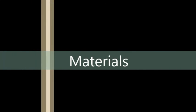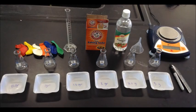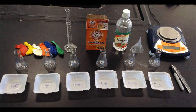The materials that we used in this project were a balance, six flasks, six weighing dishes, six balloons, a graduated cylinder, a funnel, a spatula, a permanent marker, sodium bicarbonate, which in our case is baking soda, and vinegar in substitute of acetic acid.